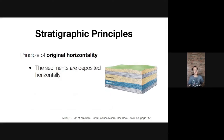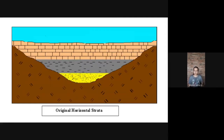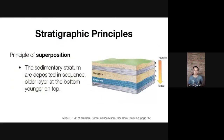First, we have the Principle of Original Horizontality. This principle tells us that sediments are deposited horizontally — one layer will be found in a horizontal layer, and all the different sediments are found in one layer. Each layer is distinct from the others above and below it.